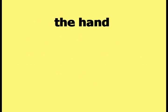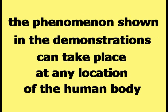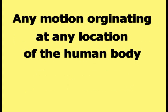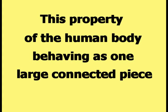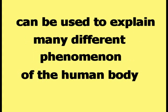The head, the hand, and the foot were used in the previous demonstrations. According to happy theory, the phenomena shown in the demonstrations can take place at any location of the human body. Any motion originating at any location of the human body can be transmitted throughout the rest of the body. This property of the human body behaving as one large connected piece can be used to explain many different phenomena of the human body.